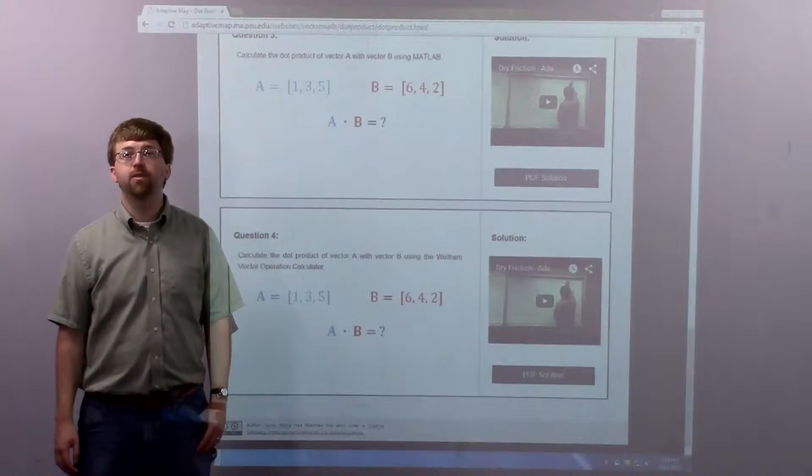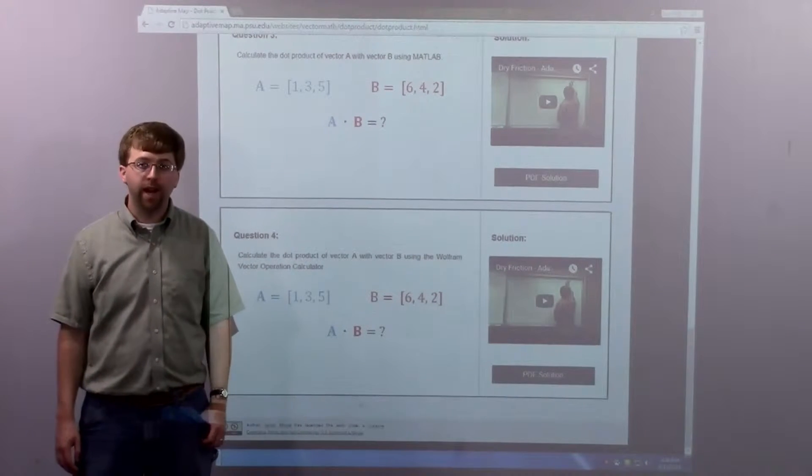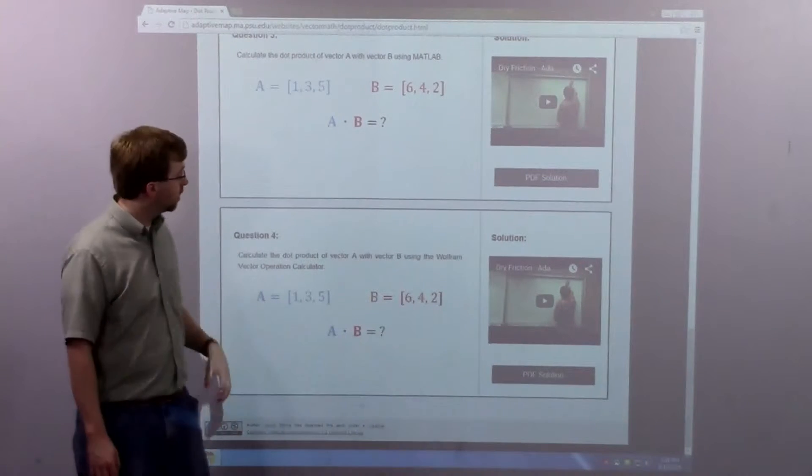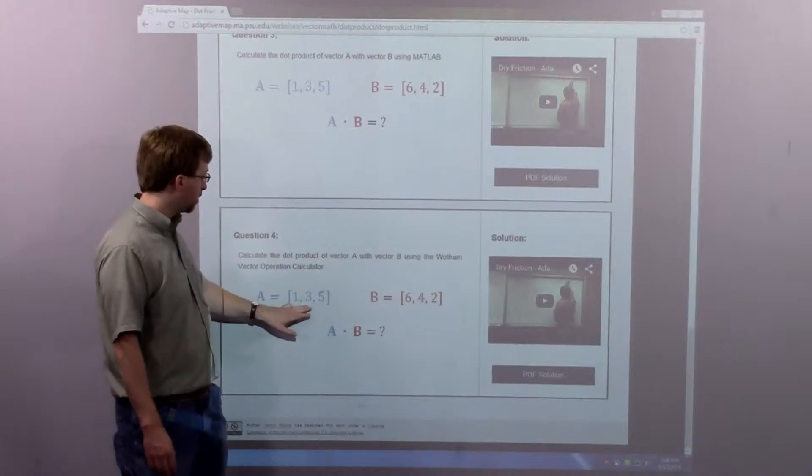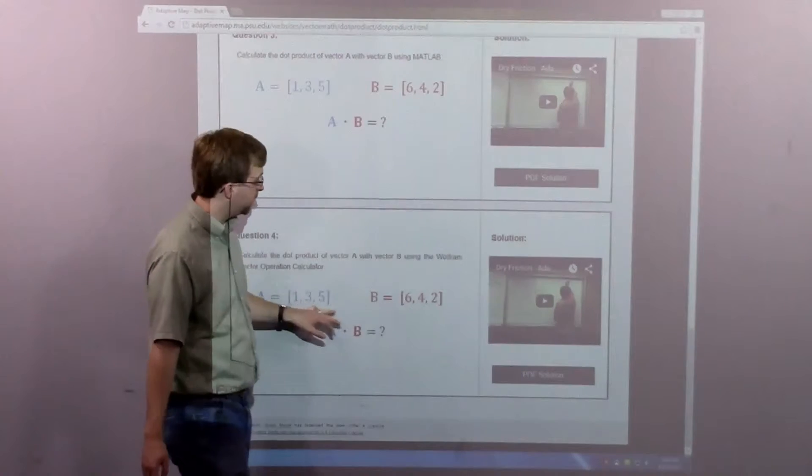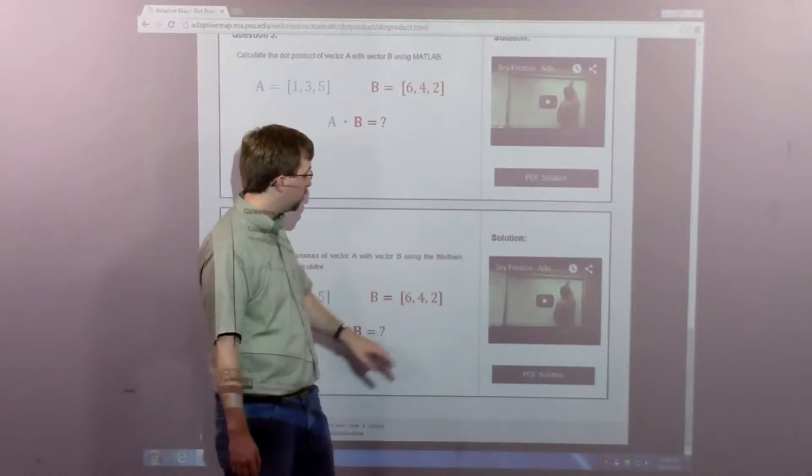Hello, for this worked example I'm asked to find the dot product of vector A with vector B. So vector A is 1, 3, 5. Vector B is 6, 4, 2.